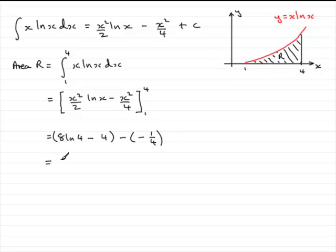Now, tidy this up a bit more. We've got 8 natural log of 4 minus 4. And then we've got minus 4 plus a quarter. So that's minus 3 and 3 quarters, which is minus 15 over 4.